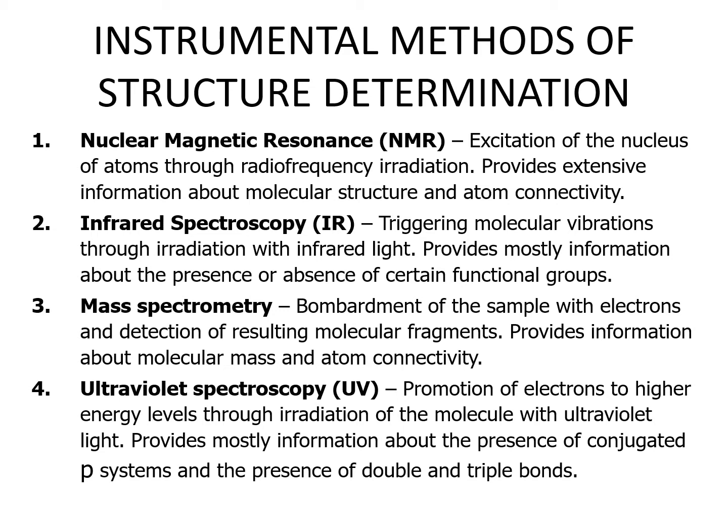Infrared spectroscopy, or IR, triggers molecular vibrations through irradiation with infrared light and provides mostly information about the presence or absence of certain functional groups. Mass spectrometry involves bombardment of the sample with electrons and detection of resulting molecular fragments, providing information about molecular mass and atom connectivity. Ultraviolet spectroscopy, or UV, promotes electrons to higher energy levels through irradiation with ultraviolet light, providing mostly information about the presence of conjugated pi systems and the presence of double and triple bonds.